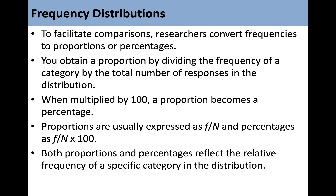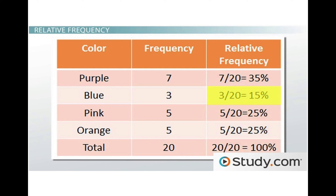To facilitate comparisons, researchers convert frequencies to proportions or percentages. You obtain a proportion by dividing the frequency of a category by the total number of responses in the distribution. When multiplied by 100, a proportion becomes a percentage. Proportions are expressed as F over N, and percentages as F over N times 100, where N stands for the number of observations. For example, if there were seven purple ones out of a total of 20, that's seven over 20, which equals 35%. Three blue ones would be 15%.